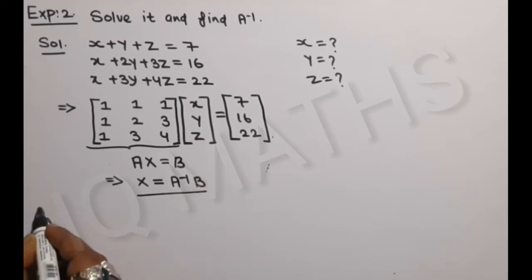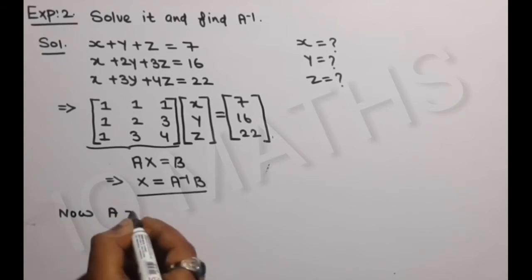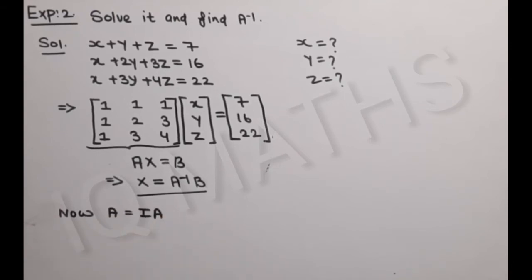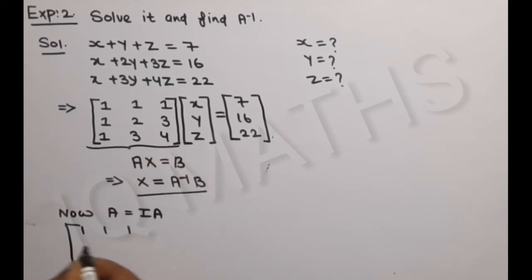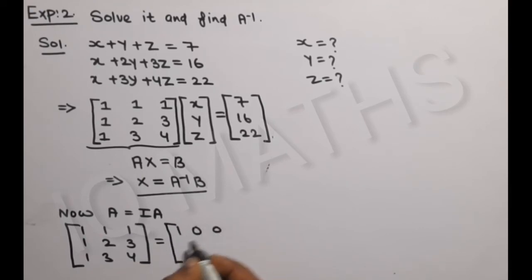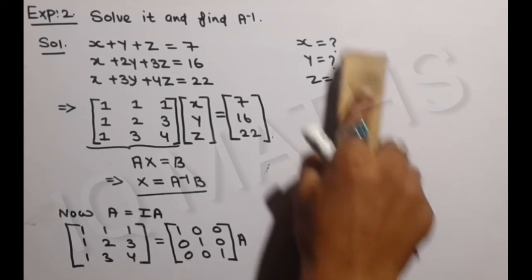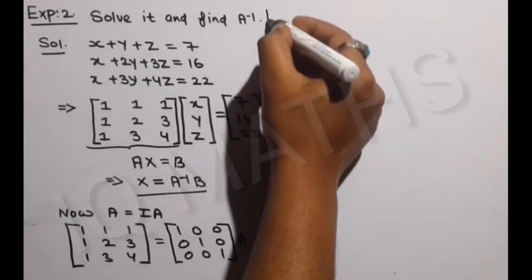तो बच्चों इस condition से शुरू करना है। A की value यहां पर लिख लेंगे: [1, 1, 1; 1, 2, 3; 1, 3, 4]। यह हमारे 3×3 order का matrix है, तो इसलिए हम यहां पर I की value को भी 3×3 order में लिख लेंगे: [1, 0, 0; 0, 1, 0; 0, 0, 1]। तो बच्चों इसको हम कैसे find करेंगे - उसका जो link है, जो पीछे हमने example करी है, आपको description में मिल जाएगा, वहां से आप check कर सकते हो।